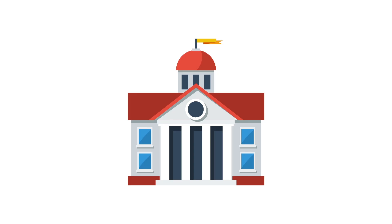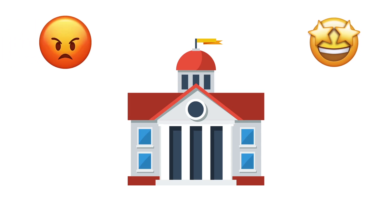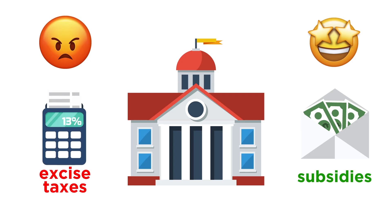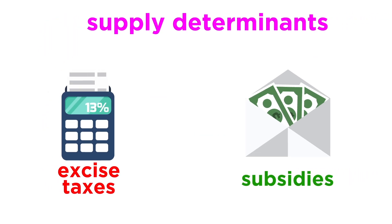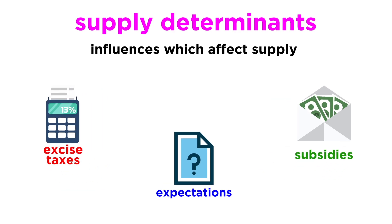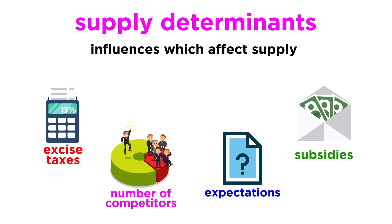Government policies can also change the supply of a good or service, in both a positive and negative way. For example, a government can provide subsidies — essentially money from the government intended to give a boost to certain businesses or industries. Conversely, governments can also establish excise taxes, meaning taxes on the production or sale of a good which reduce production. Other supply determinants include expectations about what a price might be, and the number of competitors also producing the same good or service.